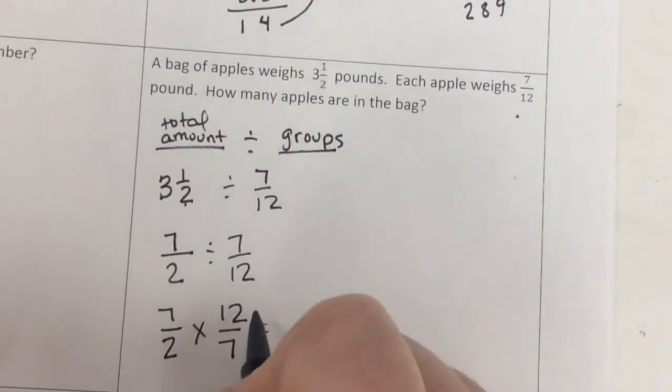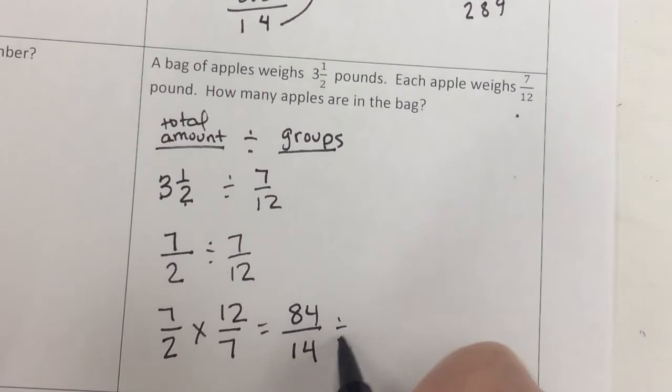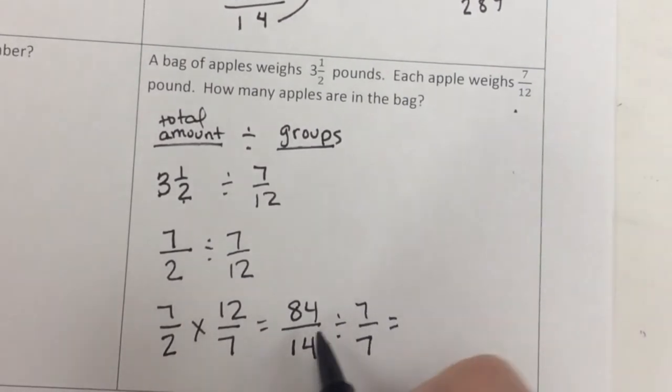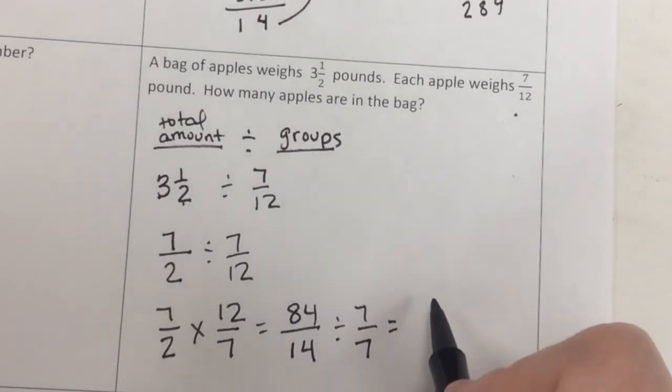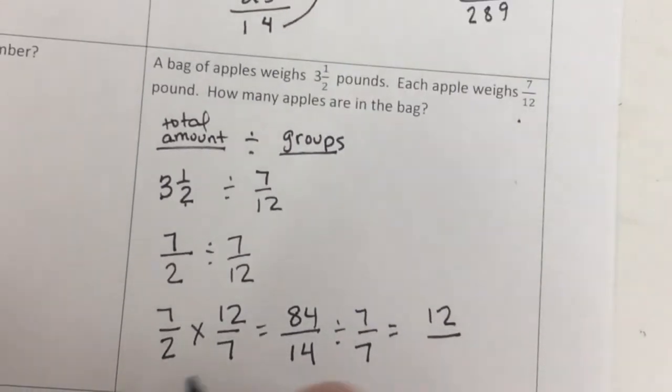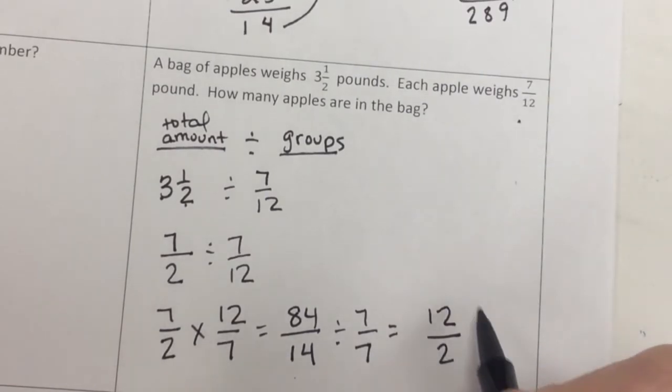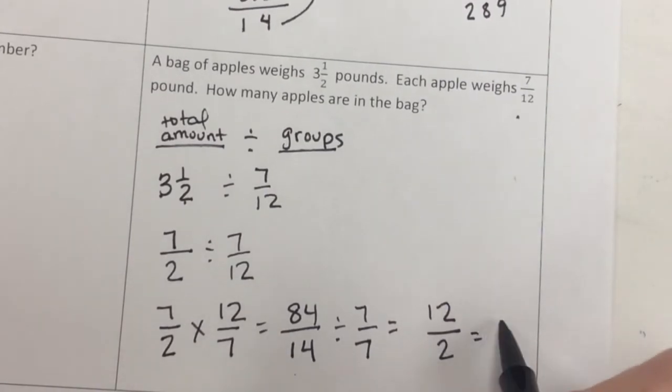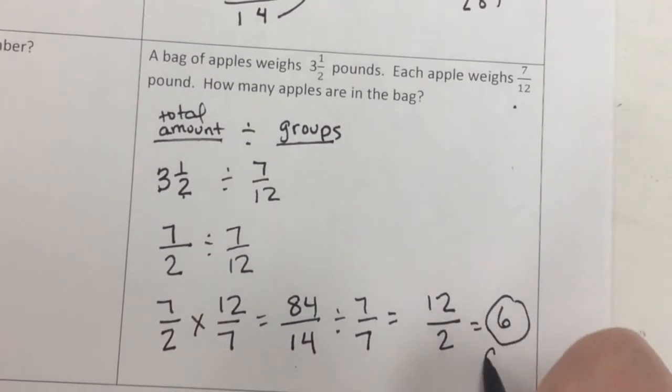So 7/2 times 12/7. 7 times 12 is 84. 2 times 7 is 14. I know that 7 goes into both of them. So I'm going to divide by 7 to simplify that for a second. 84 divided by 7 is 12. And 14 divided by 7 is 2. What is 12 divided by 2? 6. So it's 6 apples.